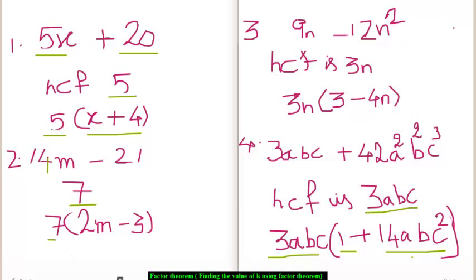So, we take 7 here and then we divide 14m by 7 to get 2m as the quotient, and we divide 21 by 7 to get 3 as the quotient. So, 2m minus 3 and 7 are the factors of 14m minus 21.